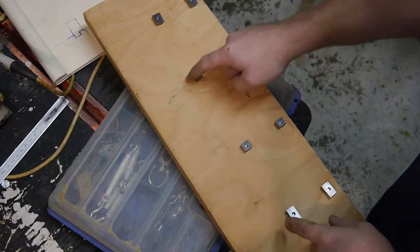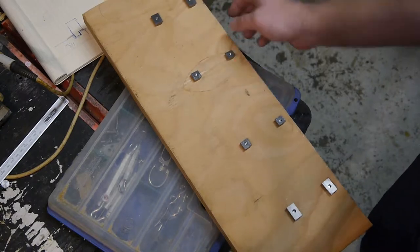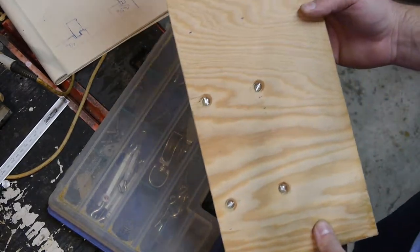Alright, so here are the T-slot nuts we made in a previous video. These are the stock ones. And this is our waste board. So let's go install it.